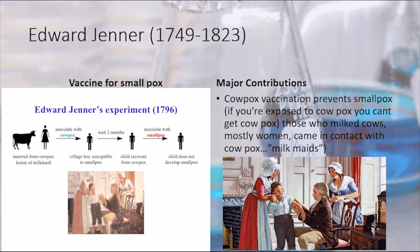Next we're going to talk about Edward Jenner. Edward Jenner was an English physician and scientist who was the pioneer of the smallpox vaccine, the world's first vaccine. The terms vaccine and vaccination are derived from variolae vaccinae, the term devised by Jenner to denote cowpox.